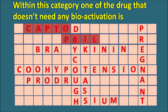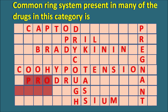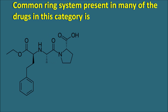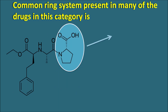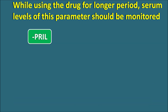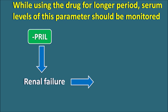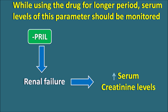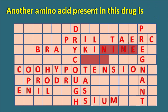The common ring system present in many drugs in this category starts with PRO — it is proline, a heterocyclic ring system present in most ACE inhibitors. We fill in proline. While using this drug for a longer period, serum levels of which parameter should be monitored? PRILs produce renal failure, which results in increased serum creatinine because creatinine clearance is reduced — so we monitor creatinine levels. Finally, another amino acid present in this drug: the block ends in NINE, indicating alanine. Alanine is an amino acid coupled with proline to form alanyl-proline.